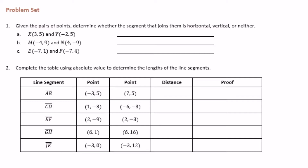Sixth grade, module 5, lesson 7, problem set. Number 1: given the pairs of points, determine whether the segment that joins them is horizontal, vertical, or neither.